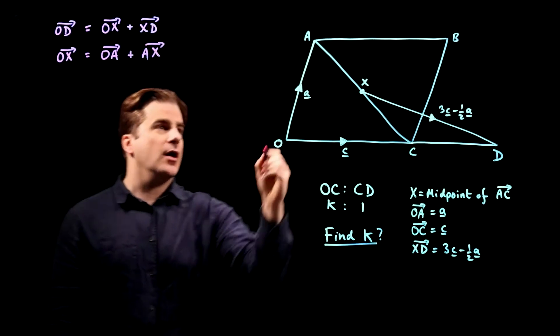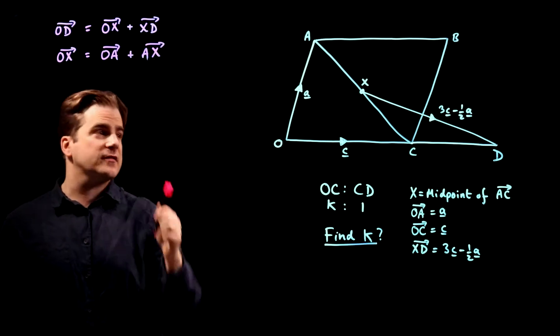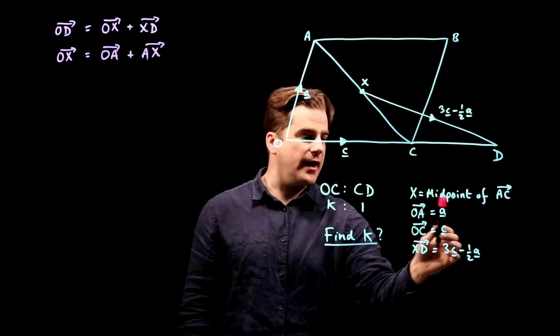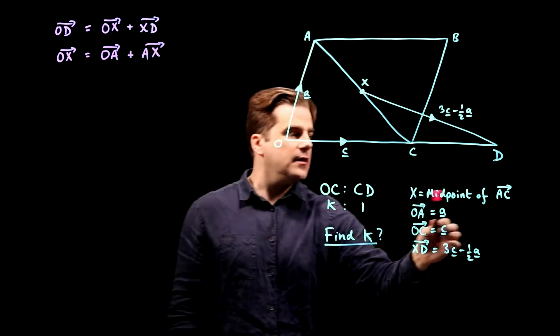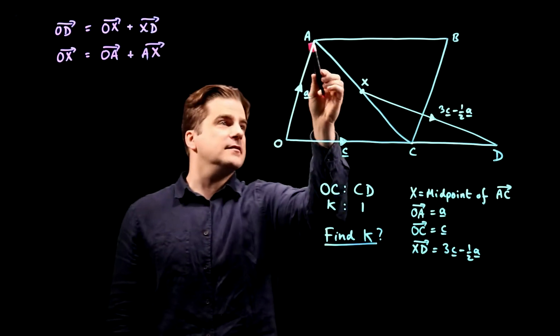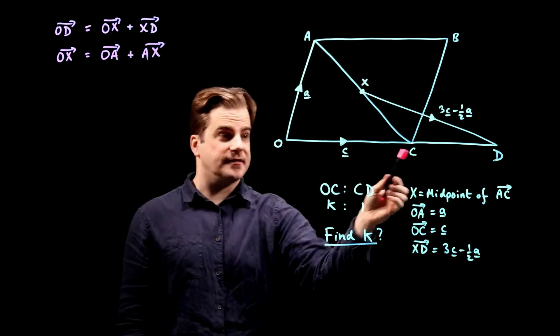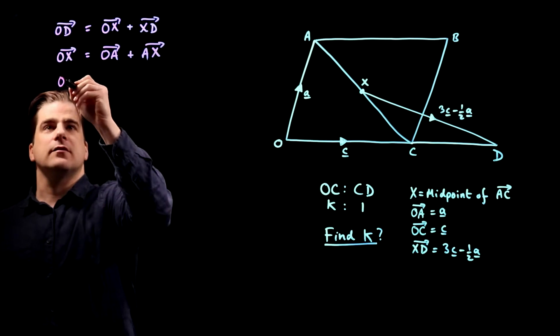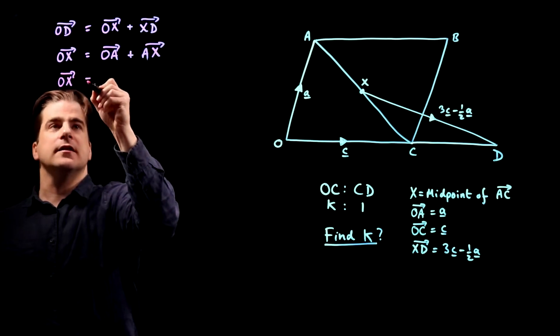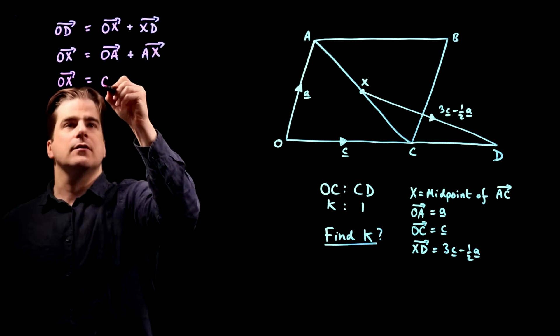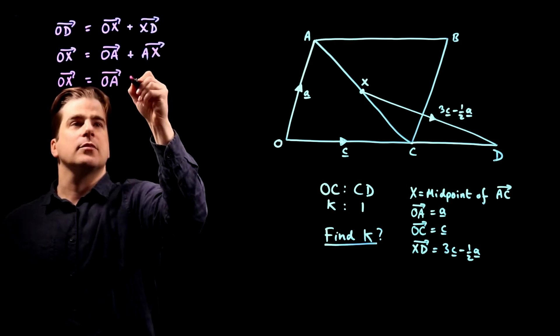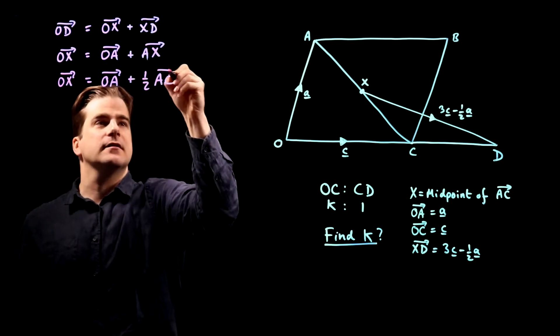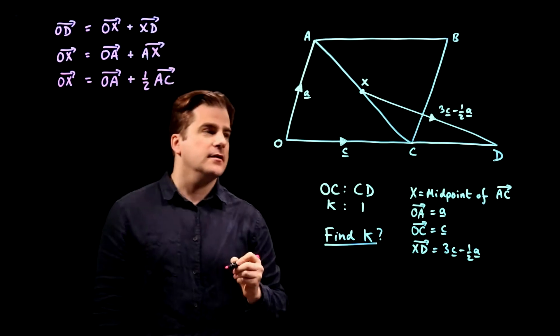Right. Well, O to A is a. So now we just need A to X. Well, we're told that X is the midpoint of AC. So that means A to X is half of A to C. So therefore, O to X is equal to O to A plus A to X is half of A to C, half of A to C.